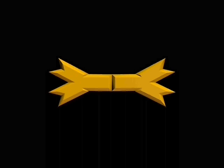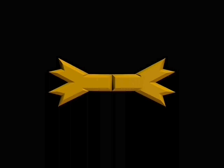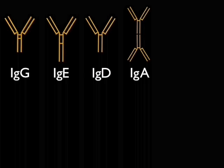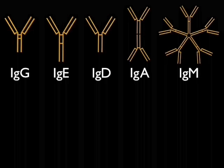Antibodies, or immunoglobulins, can be subdivided into different classes according to their structure. There are five classes, called IgG, IgE, IgD, IgA, and IgM, each having different functions.